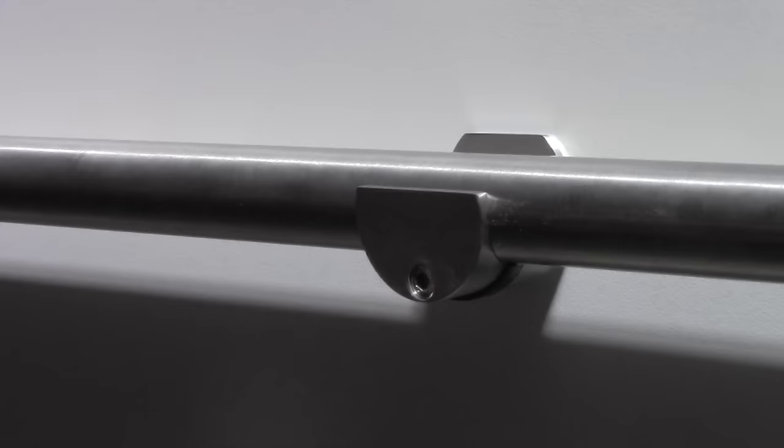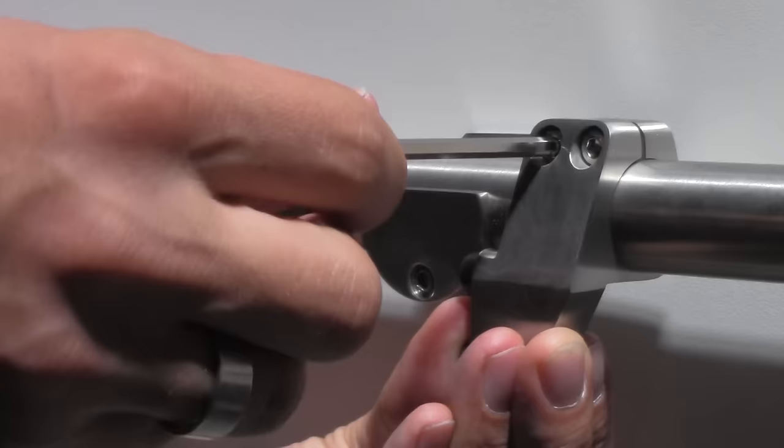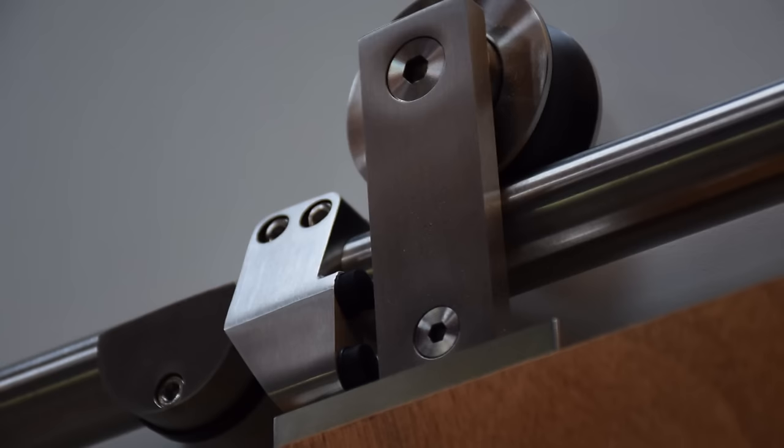Hang the door on the rail and make sure everything is operating smoothly, then we will adjust the door stops. Slide the stopper over the end of the rail to your desired location and tighten down.